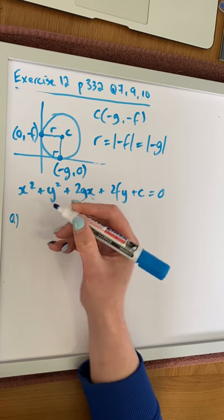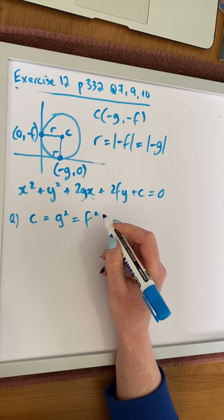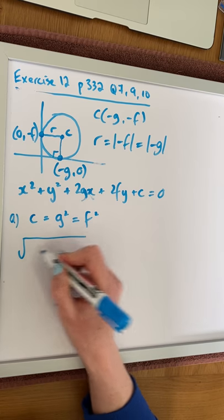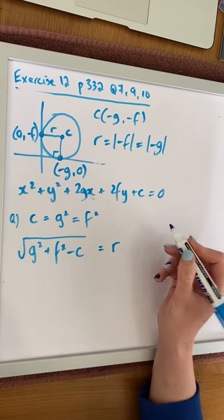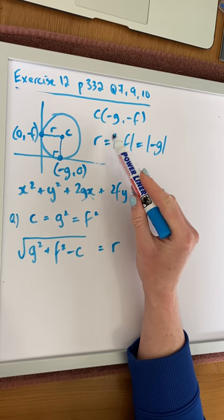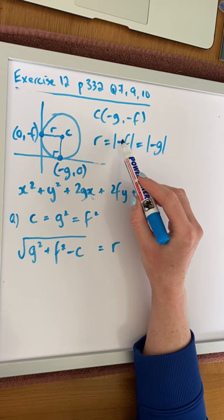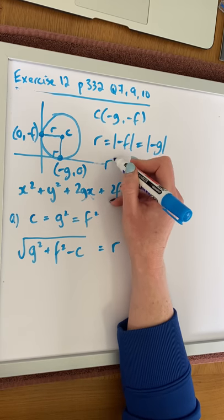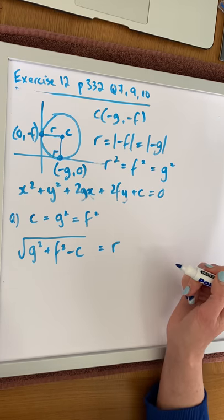In part A, we're asked to show that c = g² = f². First, we look at the formula for radius: √(g² + f² - c) = r. We know the radius equals the absolute value of f, which equals the absolute value of -f, which equals the absolute value of -g. We can square all of these, so r² = f² = g². All three of these are equal.